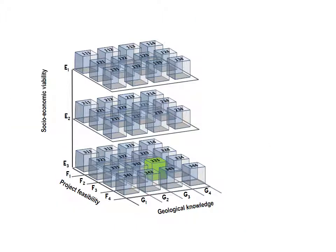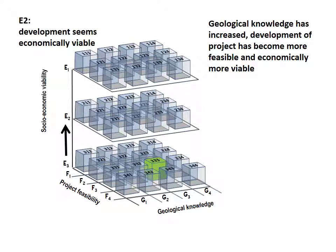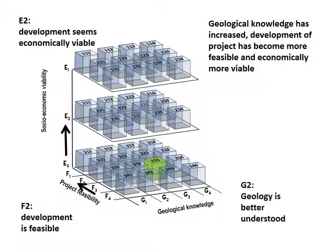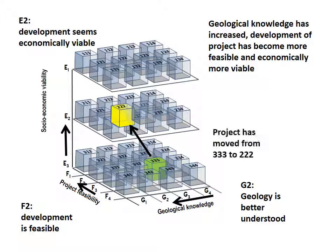When a project progresses and development seems economically viable, the E-category progresses from E3 to E2. As development becomes more certain, the project progresses from F3 to F2 on the F-axis. And with increasing geological knowledge, the G-axis becomes G2. The original cube position 3, 3, 3 has now moved to position 2, 2, 2.